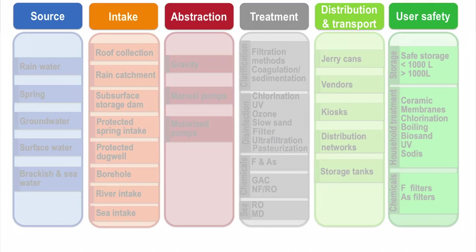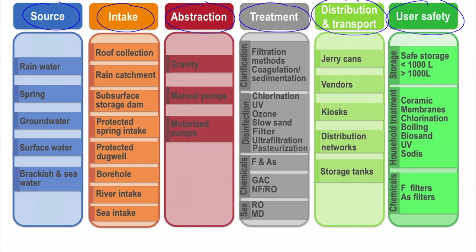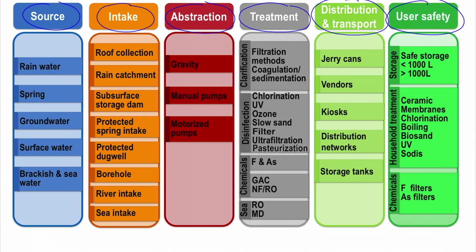Most water supply systems can be structured along six functional groups: source, intake, abstraction, treatment, distribution and transport, and user safety. The technologies from each functional group perform specific tasks of the water supply system and can be linked between each other to show possible combinations.